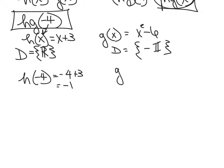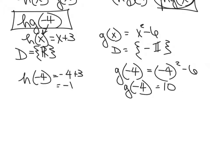Then we do g of negative 4, and that equals negative 4 squared minus 6, which is 16 minus 6, which is 10. And what does it say to do with both of those answers? It says to multiply them. So we get hg of negative 4 equal to negative 10 when we multiply them.